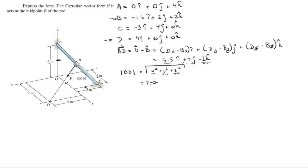And now you can find the unit vector BD by dividing the vector over the magnitude, and that's gonna give you the unit vector BD, which is a vector right here with a magnitude of one.